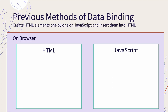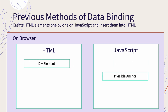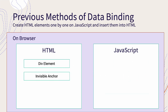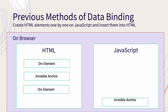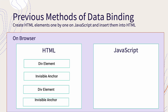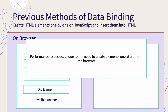The conventional method of data binding has been to create HTML elements one by one in JavaScript and insert them into the HTML. This creates performance problems because the number of times the elements must be created one by one on the browser increases in proportion to the number of elements.